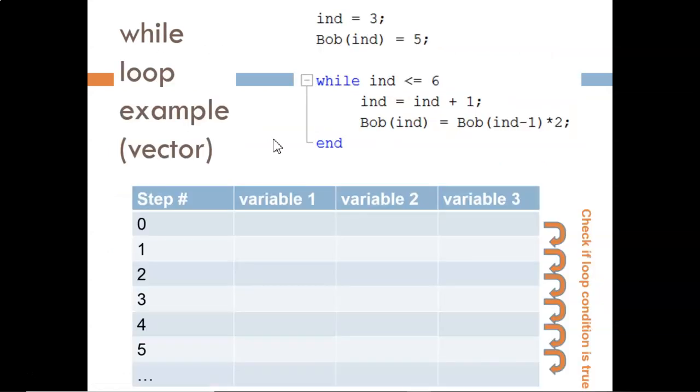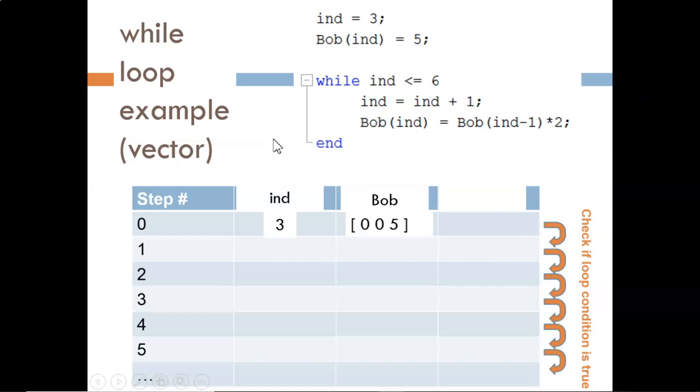With that primer, let's now build the table. First, we fill in the variable names. There are only two in this case. Then we fill in the values before reaching the loop. In this case, IND is three, and BOB is that vector we saw last slide. Now, reaching the while statement, we evaluate the condition. Yes, IND is less than or equal to six, so we enter the loop.